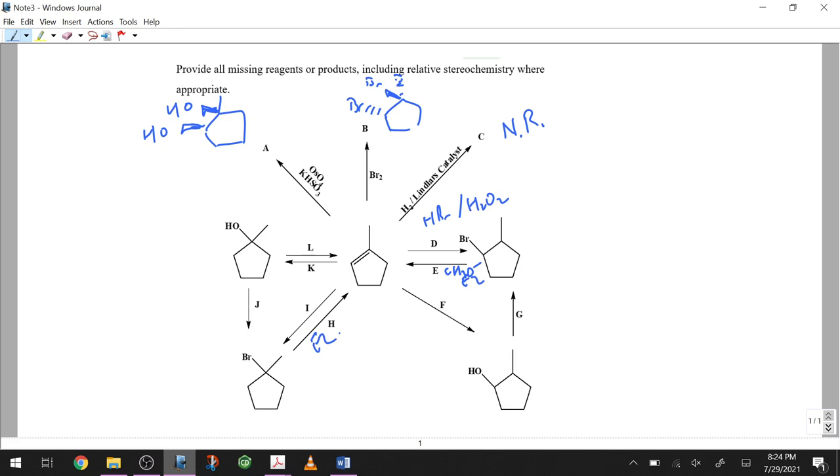F: alcohol in the less substituted position - that's hydroboration. So this is BH3 THF first step, second step hydrogen peroxide and sodium hydroxide.